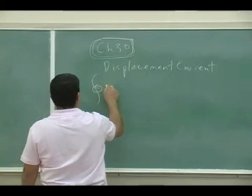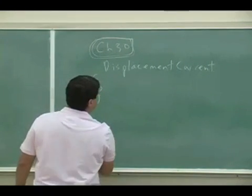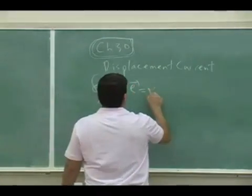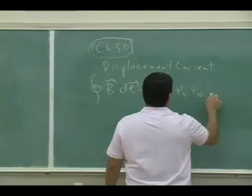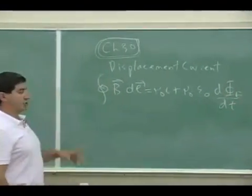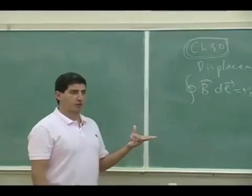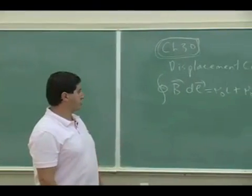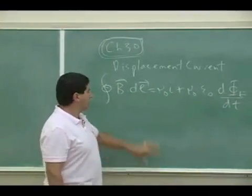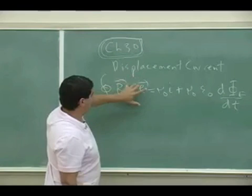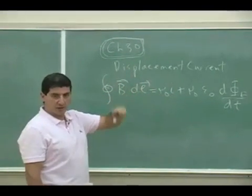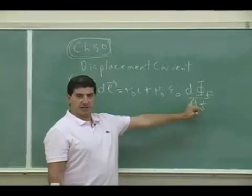I actually introduced it the first thing when we first started Chapter 30. I said this is integral B dot DL equals mu zero I. This first part we've already dealt with. We've noticed that when there is a current it creates a magnetic field that loops around it. This part is the new element.